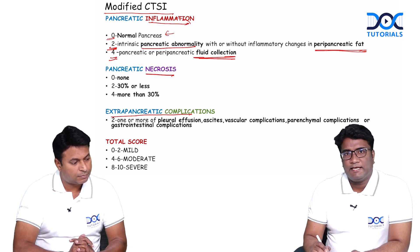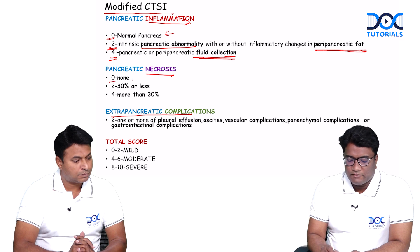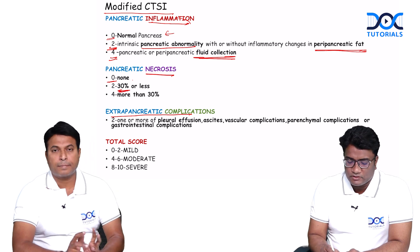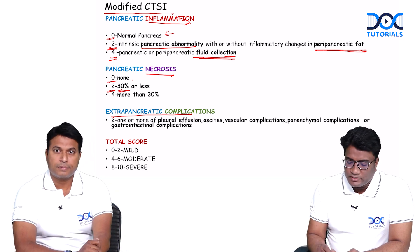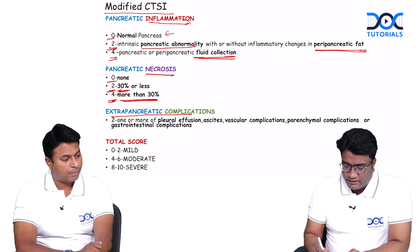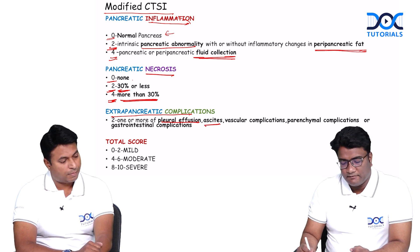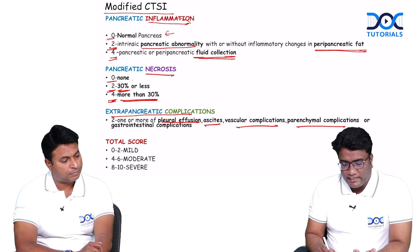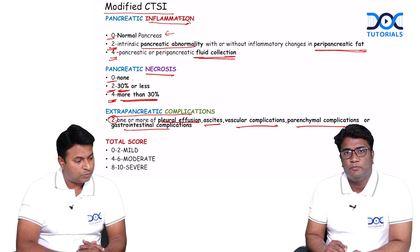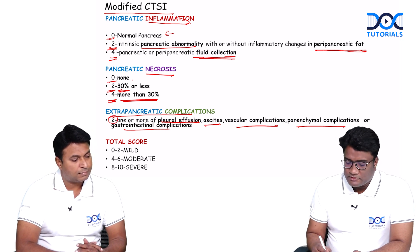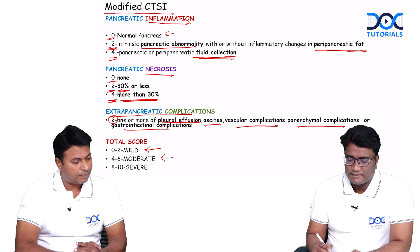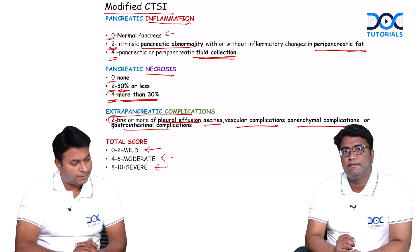We also score for necrotic areas within the pancreas: no necrotic areas scores zero; areas of necrosis less than 30% involvement scores two; more than 30% scores four. For any extra-pancreatic complications — such as pleural effusion as seen in our case, ascites, vascular complications, parenchymal or gastrointestinal complications, or bowel ischemia and perforations — we give a score of two. Summing the total: zero to two is mild pancreatitis, four to six is moderate, and eight to ten is severe pancreatitis.